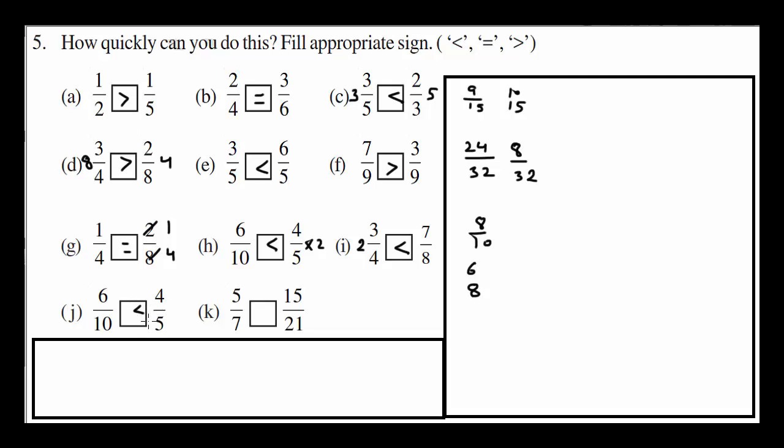And here. 5 times 2 is 10. Or 4 times 2 is 8. Again, 4 by 5 is greater than 6 by 10. It's equal. 7 times 3 is 21 and 5 times 3 is 15.